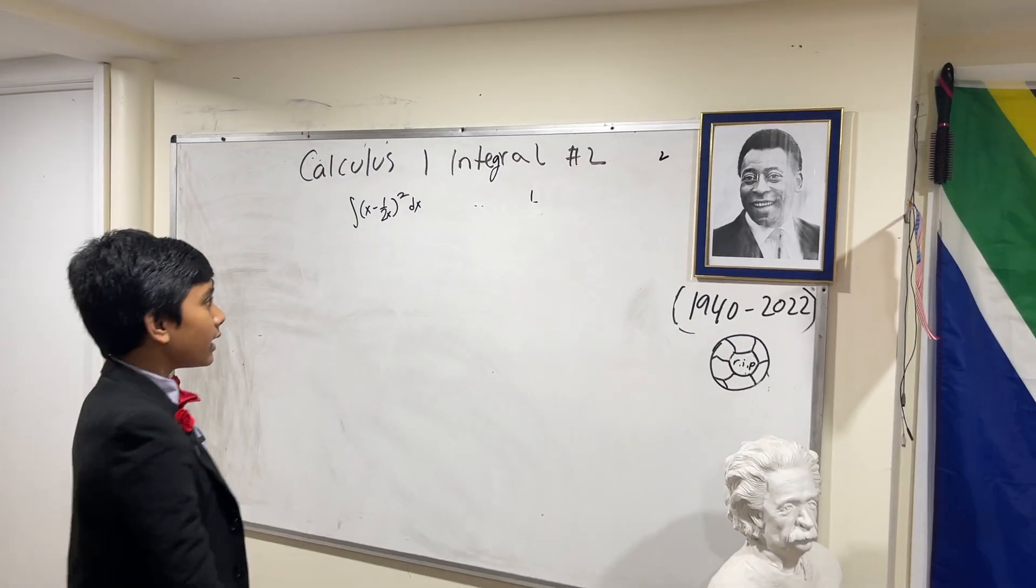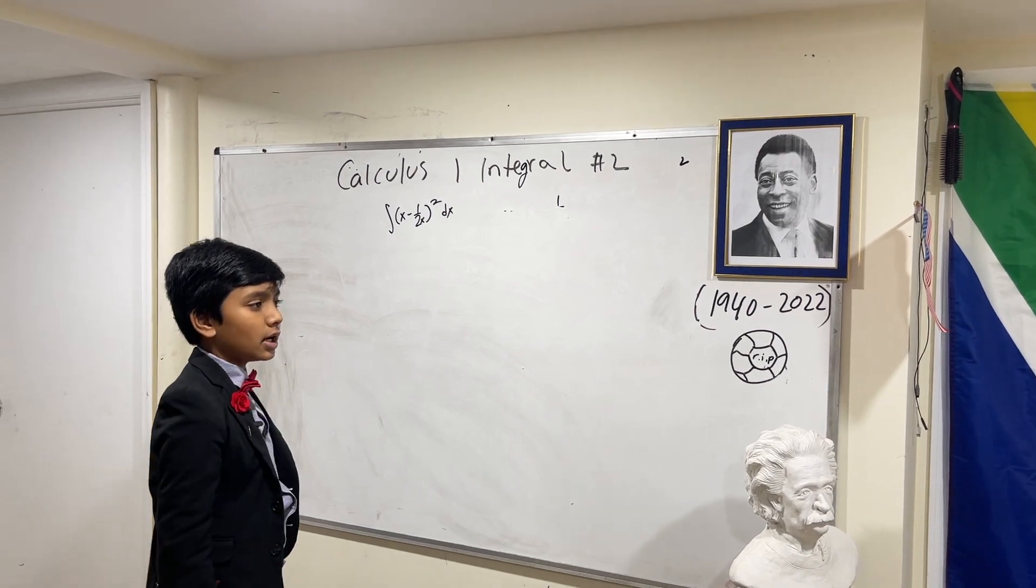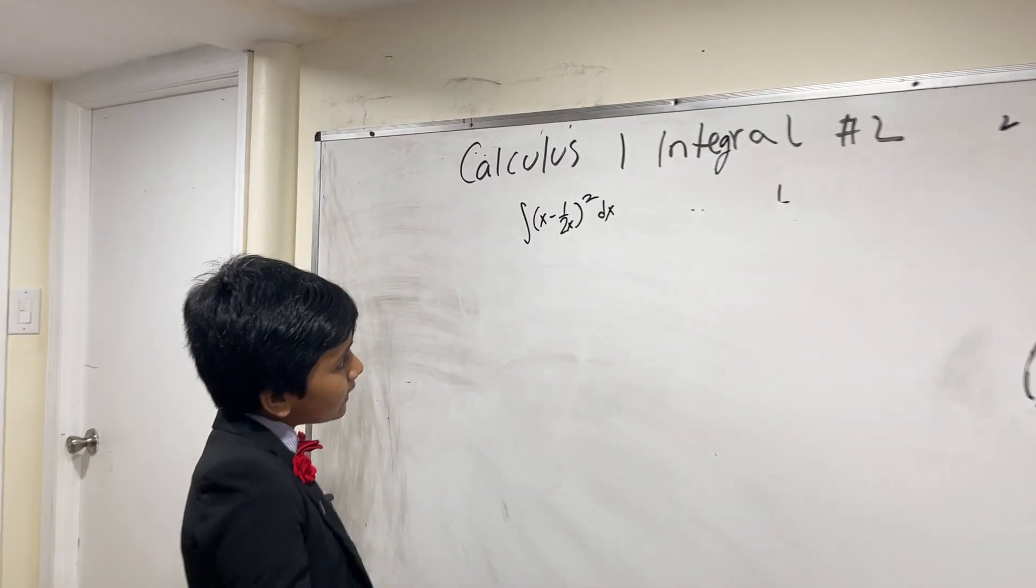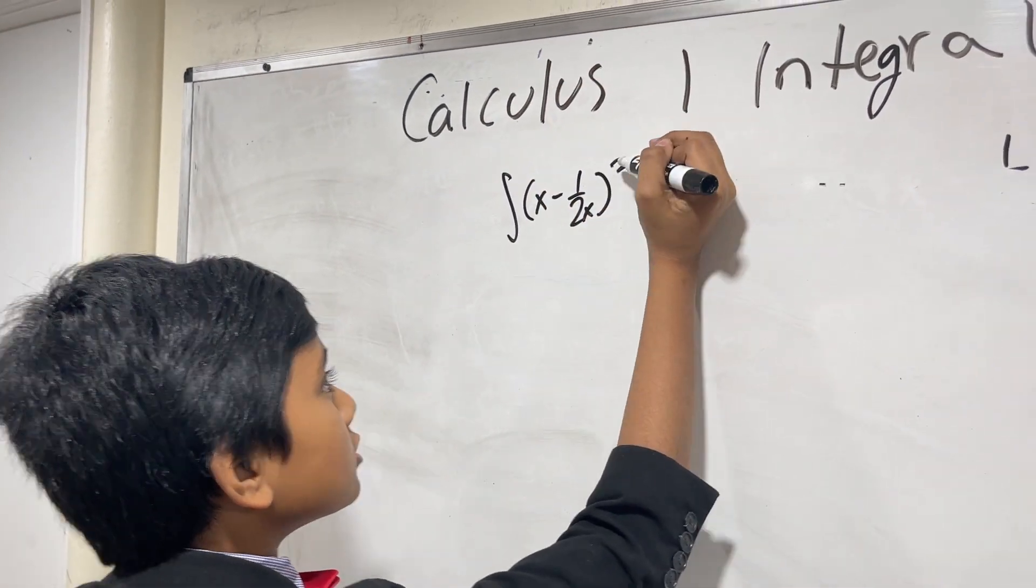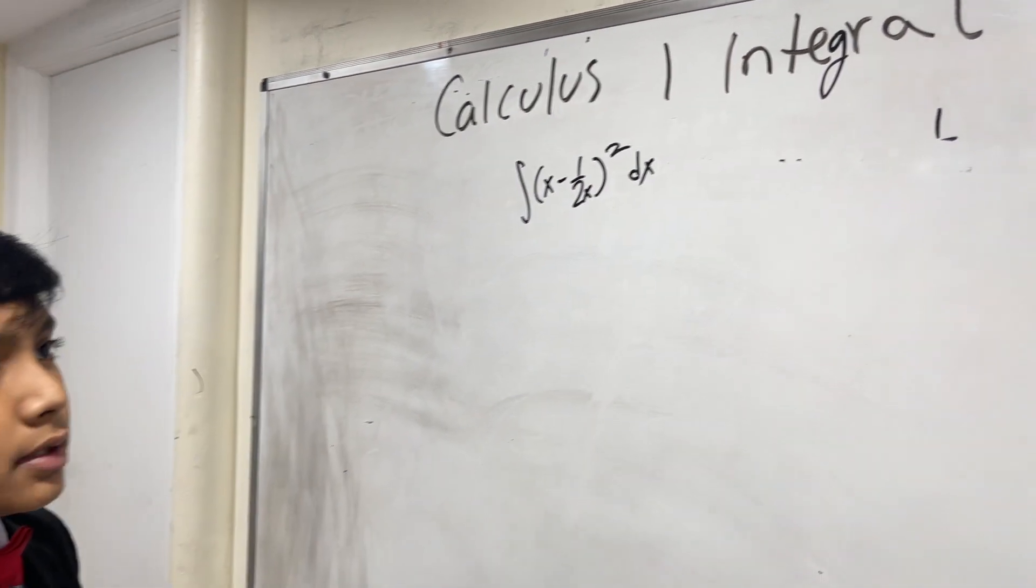Usually we would do a u sub, but first of all, there's nothing to cancel out here, and second of all, there's only a power of 2, so it's relatively benign.